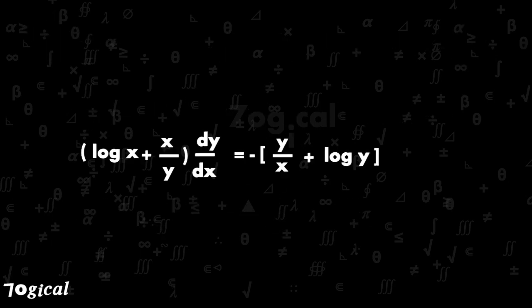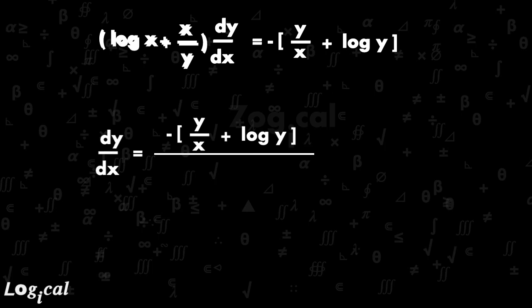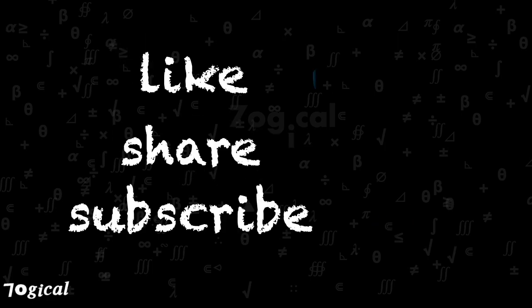Then dy by dx is equals to minus y upon x plus log y upon log x plus x upon y. Now this is the answer.